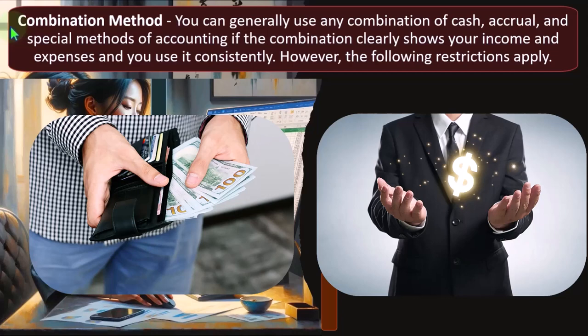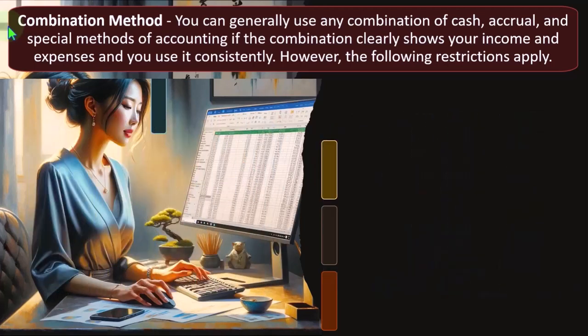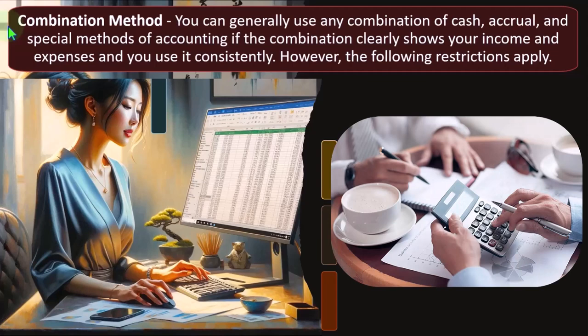The reason this is really important is that you have to have a method that's appropriate for your business, and you want to make sure you've selected the appropriate method for taxes. Once you've selected a method — which typically happens in the first year of the Schedule C — it's difficult to change. You could, but you typically have to get approval or have some justification, because consistency is a general accounting principle, which is also emphasized by the IRS.